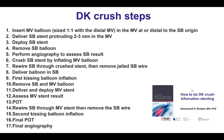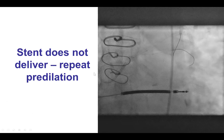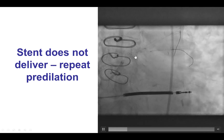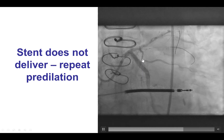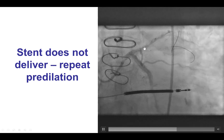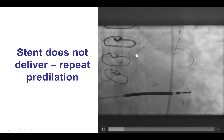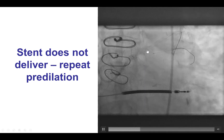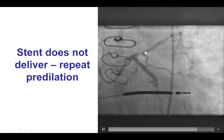The DK crush is a great technique, but it's complex and has multiple steps — 17 to be specific. We started with the first step, which was to deliver a stent into the diagonal. We also had a balloon in the main vessel, both for using the side branch anchoring technique to help deliver equipment, and because after the stent is deployed, the next step is to crush the stent.